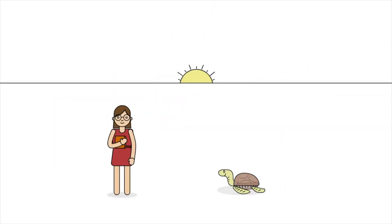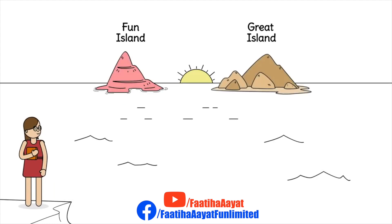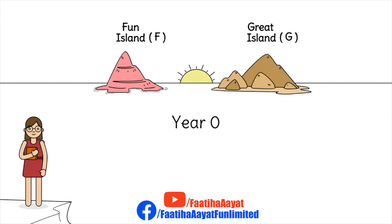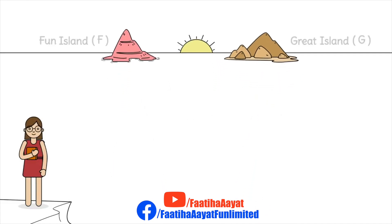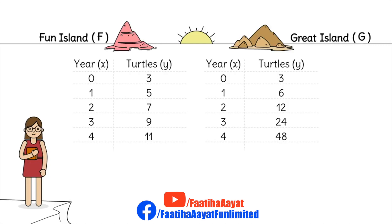Imagine that I'm a scientist trying to figure out the population of turtles on two islands. These two islands, Fun Island and Great Island — I call them F Island and G Island for short — they have no turtles on them. In turtle year zero, three turtles managed to go there. I come back in one year to see the population. One year later, F Island has five turtles while G Island has six turtles. I keep checking to see how the populations have risen, and this is the data that I managed to get.